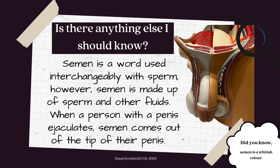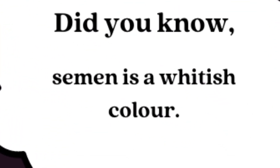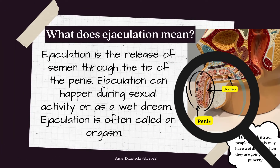Is there anything else I should know? Yes — semen is a word used interchangeably with sperm; however, semen is made up of sperm and other fluids. When a person with a penis ejaculates, semen comes out of the tip of their penis. Did you know semen is a whitish color?